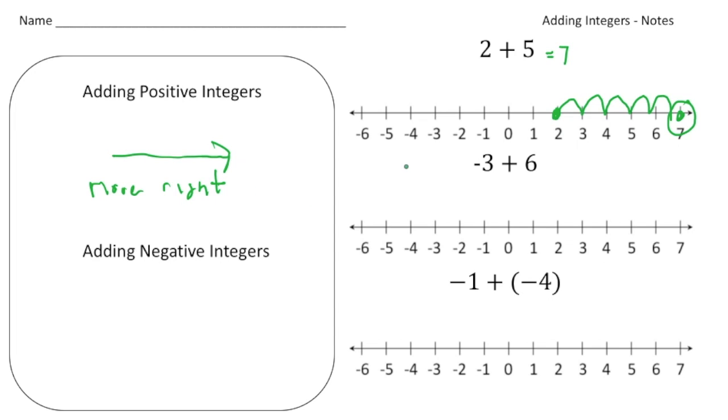Now, when we add a negative integer, we do the opposite. But before we do that, let's do one more positive. So let's say if we're at negative 3 and we're moving plus 6, we're going to add 6. We're going to move to the right six more spots. So it's going to be one, two, three, four, five, and six. And we end up at positive 3.